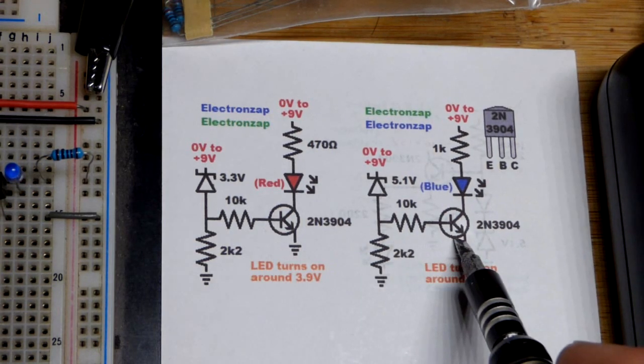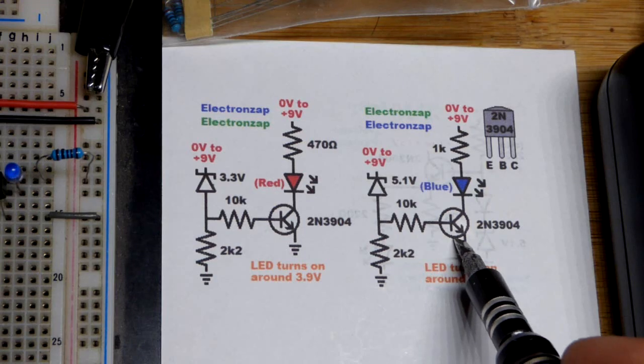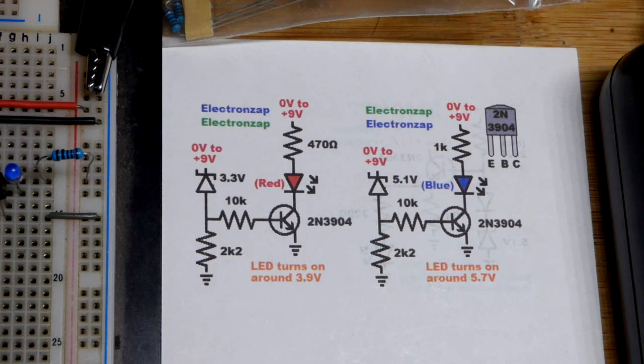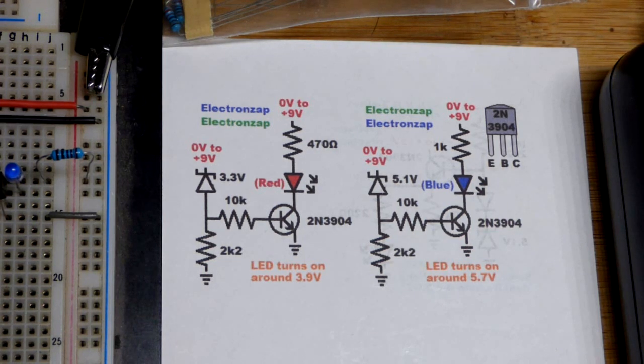So the more you understand different types of transistors, the more you understand how they're working in the integrated circuit as well. And so it makes more sense why the integrated circuit might have its flaws that it has.